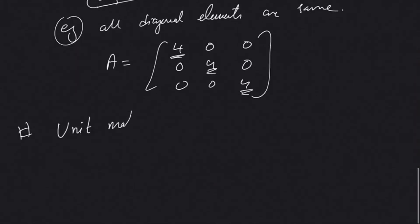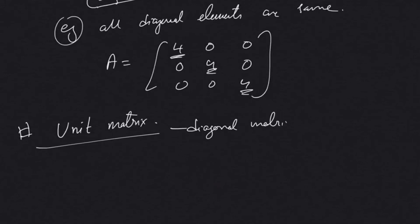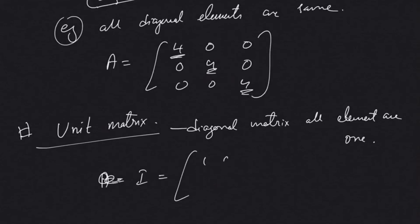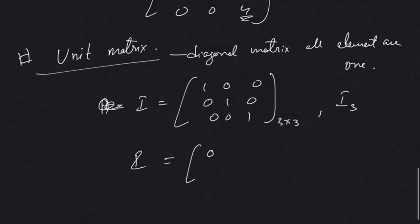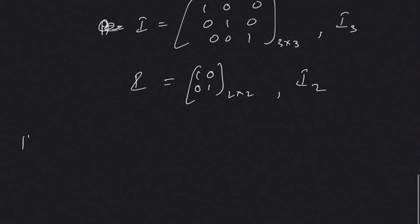Then we move on to the unit matrix. A unit matrix is a diagonal matrix in which all diagonal elements are unity, that is 1. It is generally denoted by I. For example, a matrix A with 1, 0, 0, 0, 1, 0, 0, 0, 1 is a 3 by 3 unit matrix, written as I3. We can also have a 2 by 2 unit matrix: 1, 0, 0, 1 — written as I2.